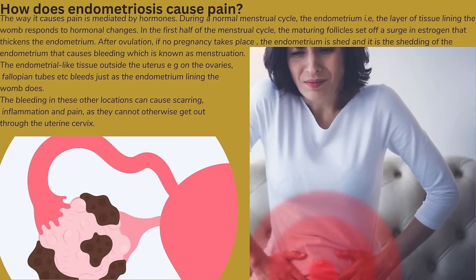How does endometriosis cause pain? The way it causes pain is mediated by hormones. During a normal menstrual cycle, the endometrium — that is, the layer of tissue lining the womb — responds to hormonal changes. In the first half of the cycle, maturing follicles set off a surge in estrogen that thickens the endometrium. After ovulation, if no pregnancy takes place, the endometrium is shed, and it is this shedding that causes bleeding known as menstruation.